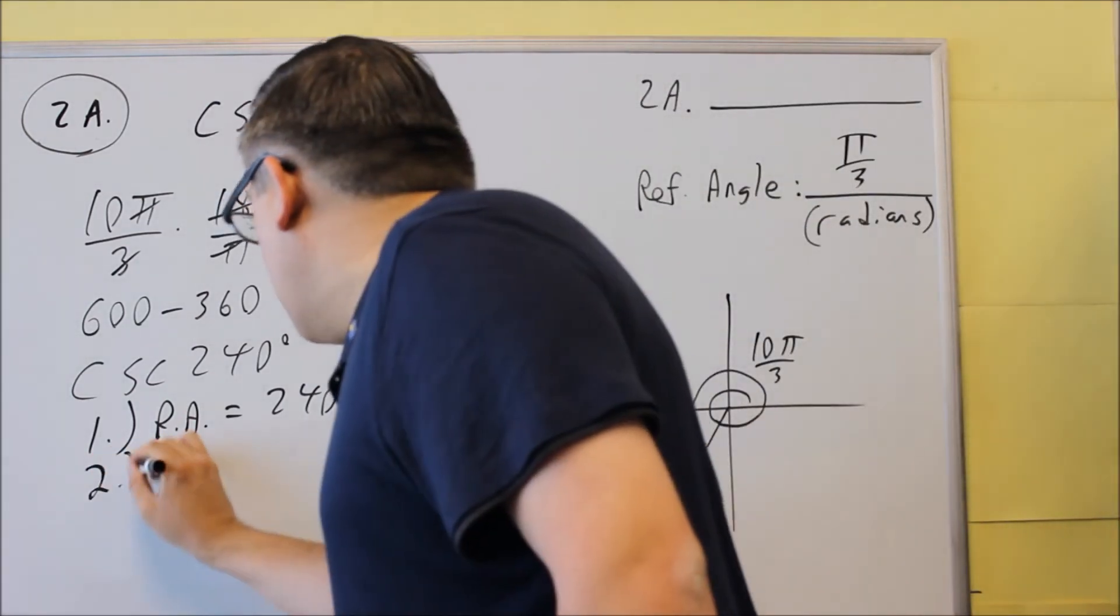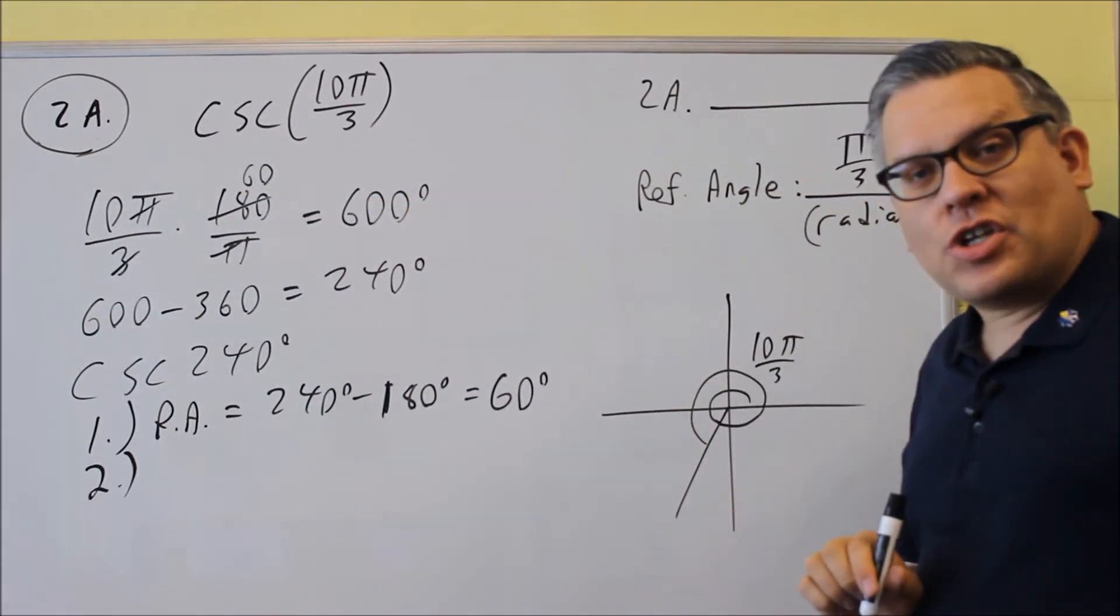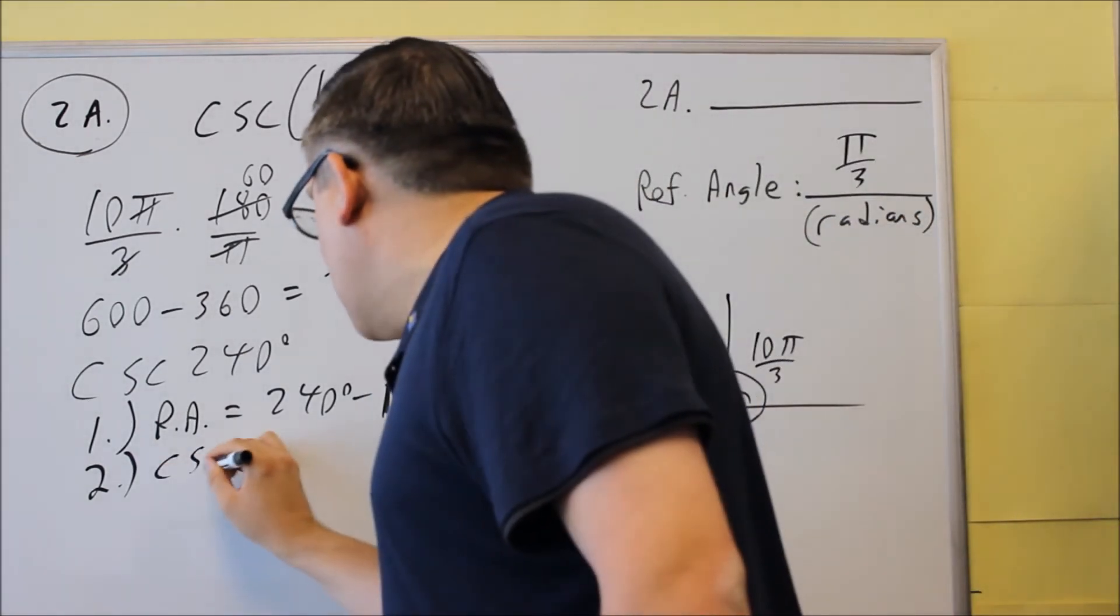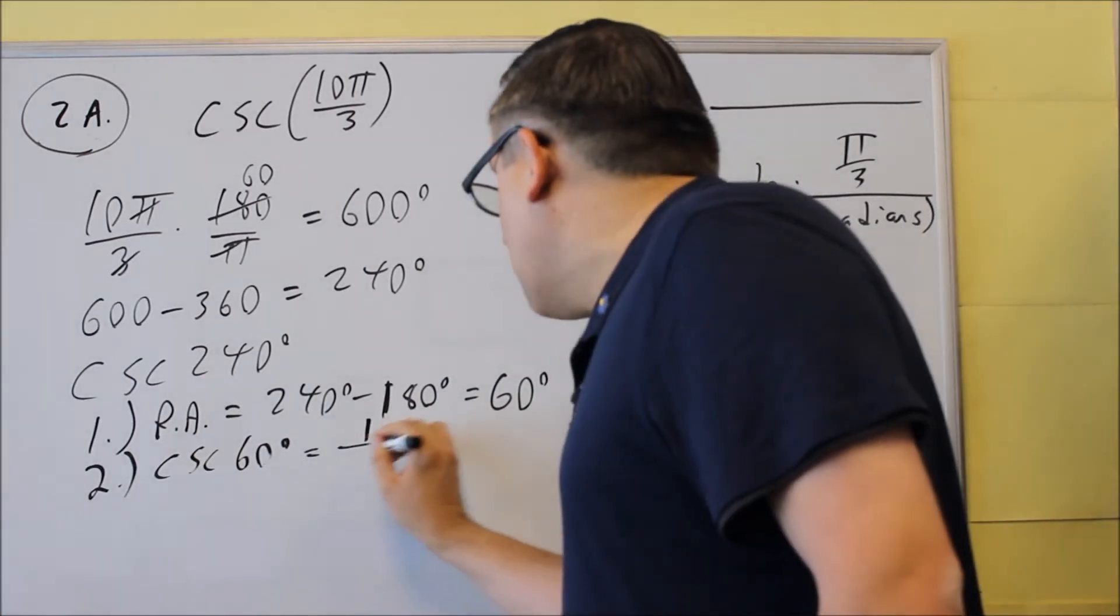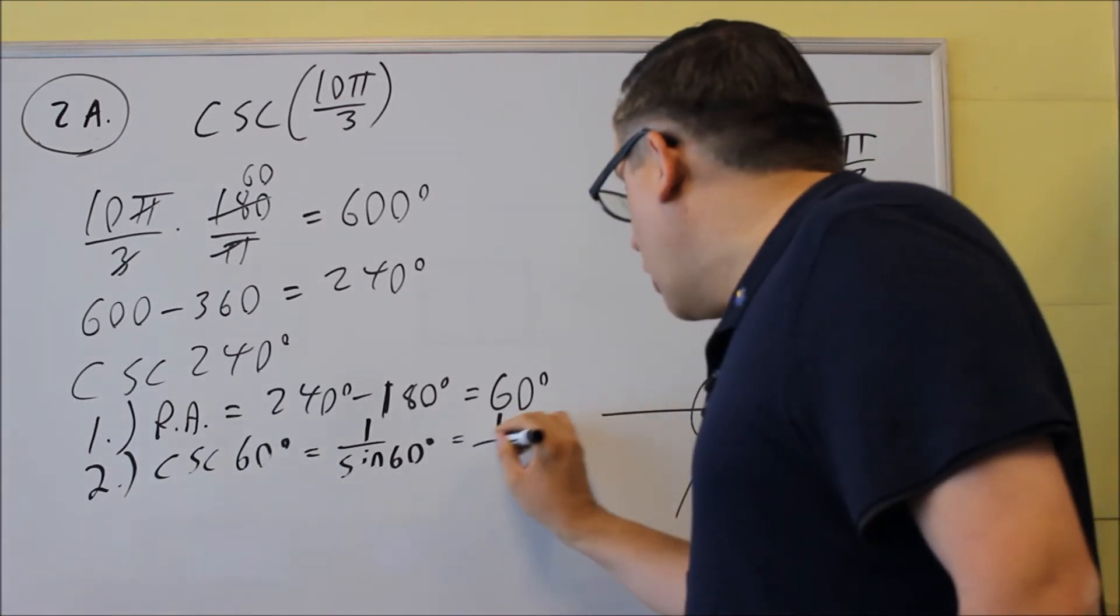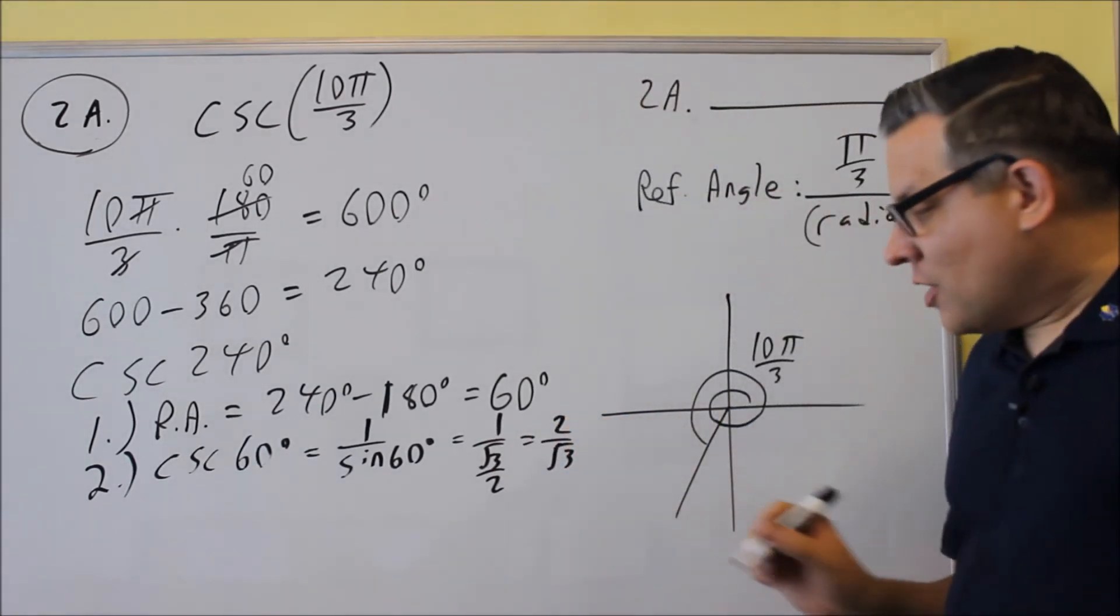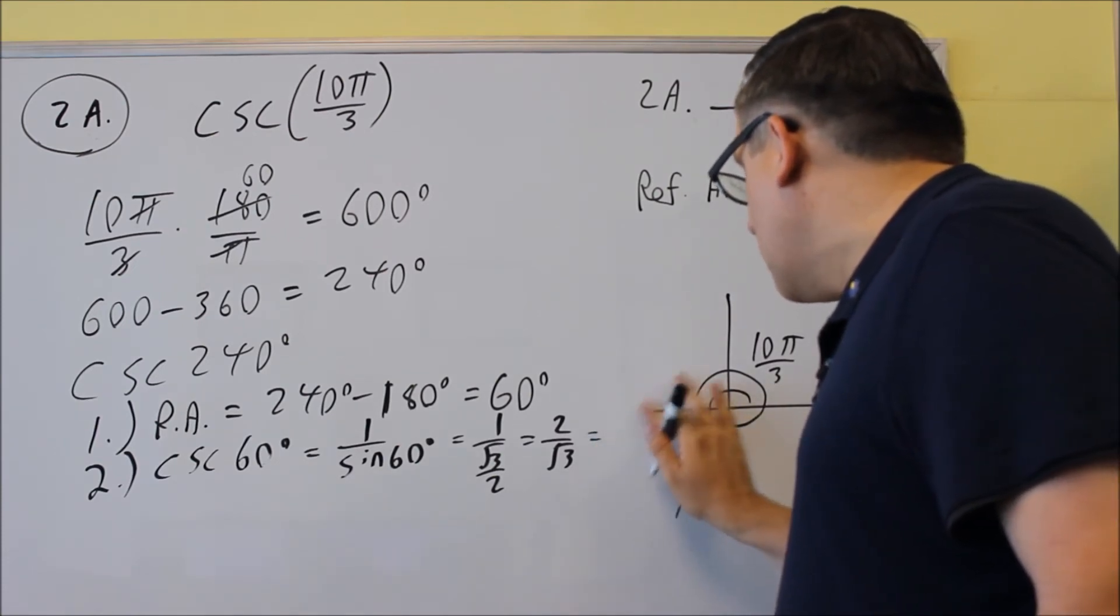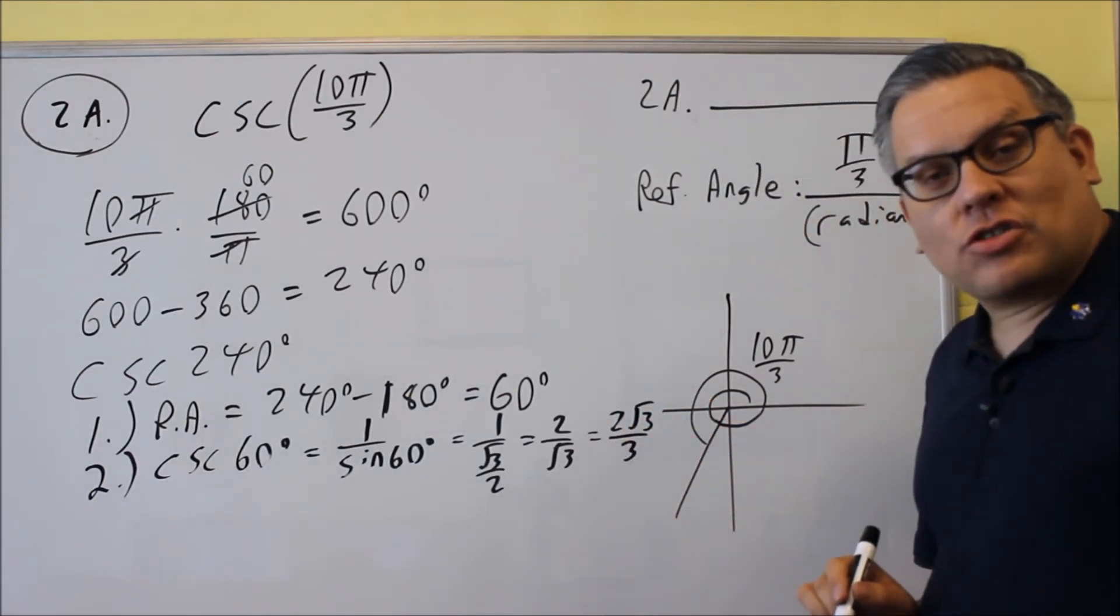Step number two. Step two is you're going to apply the trig function in the problem, which for this problem is cosecant. And you're going to apply it to the reference angle. So I want to do cosecant 60 degrees and get the exact value. Now cosecant 60 is the same thing as 1 over sine. So we're really going to do 1 over sine 60, which is going to be 1 over square root of 3 over 2, which is 2 over square root of 3. So that would be the, and if you want to rationalize that, you could, if you rationalize it, then you would get 2 square root of 3 over 3, and that would be the rationalized value.